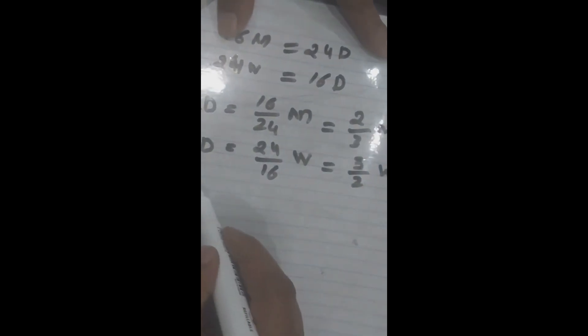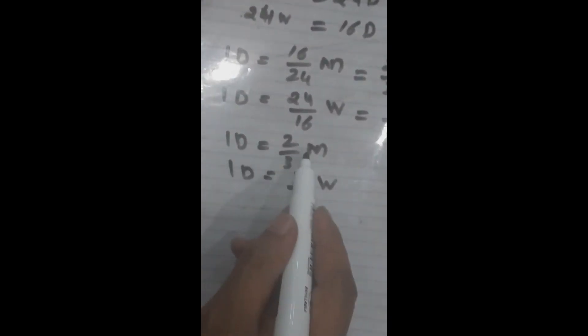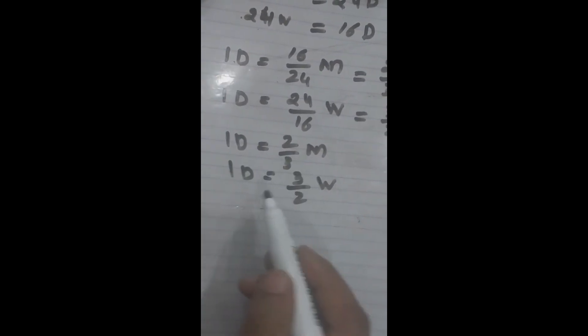So 1 day is equal to 2 by 3 M, and 1 day is equal to 3 by 2 W. Now these both sides are equal to 1 day, so these two sides should be equal to each other.